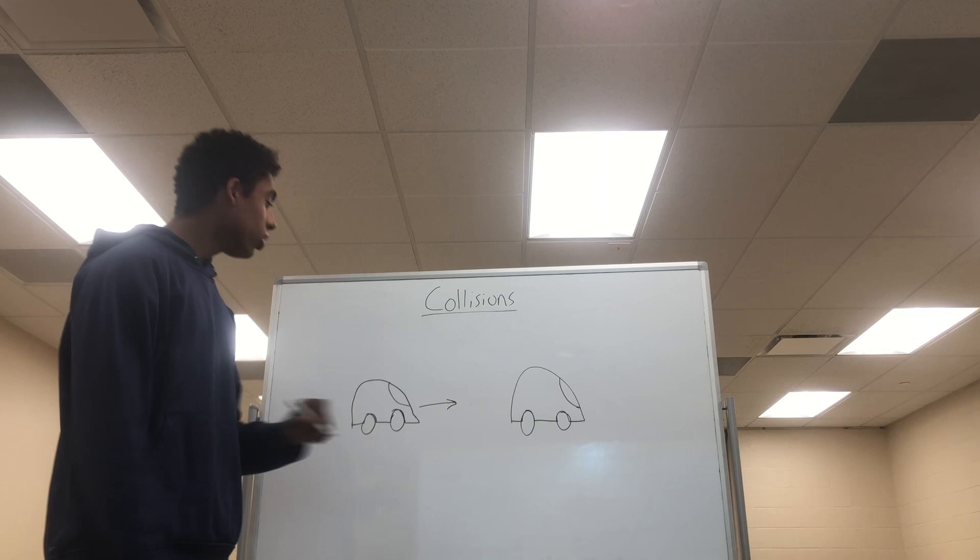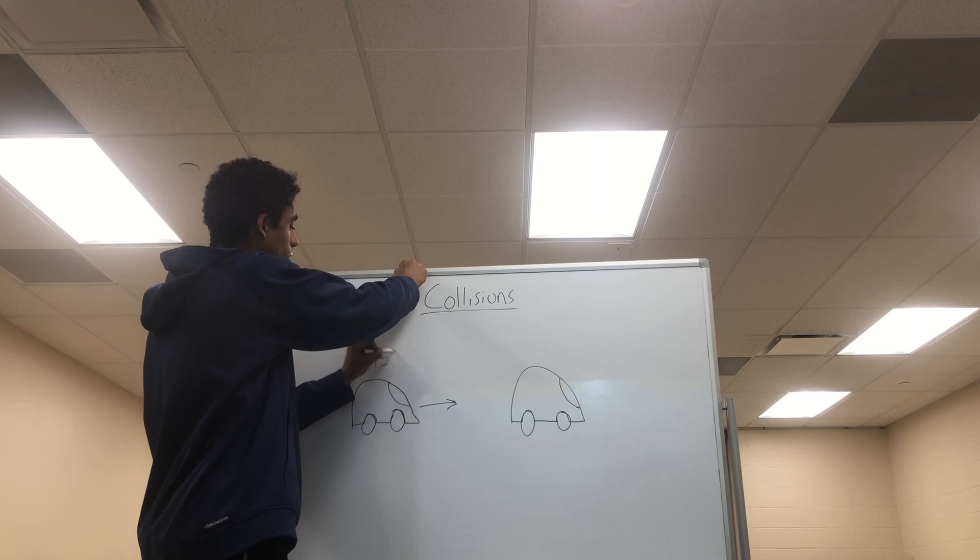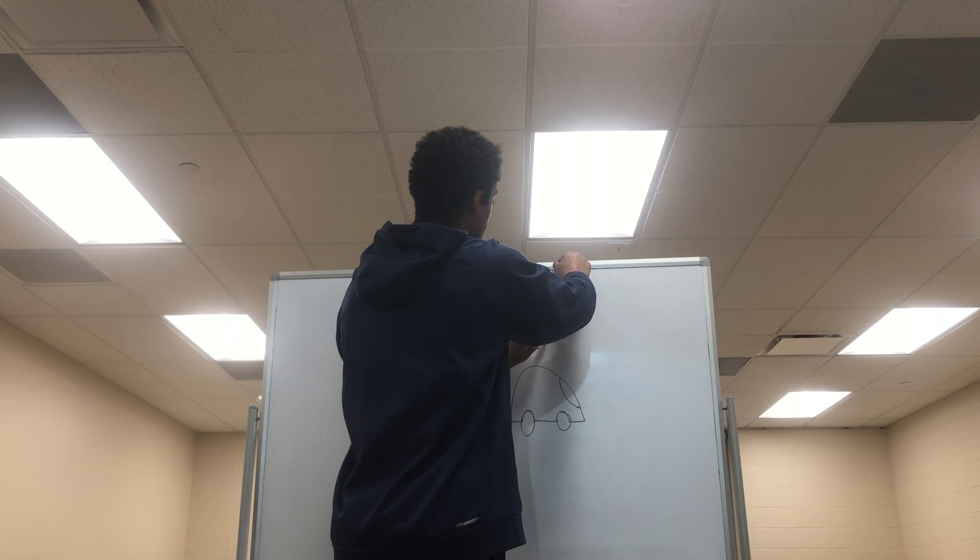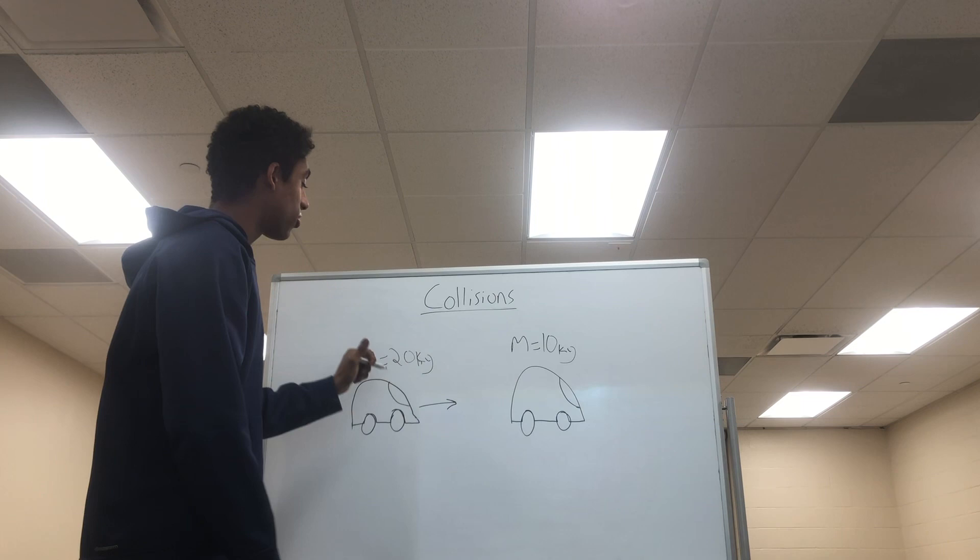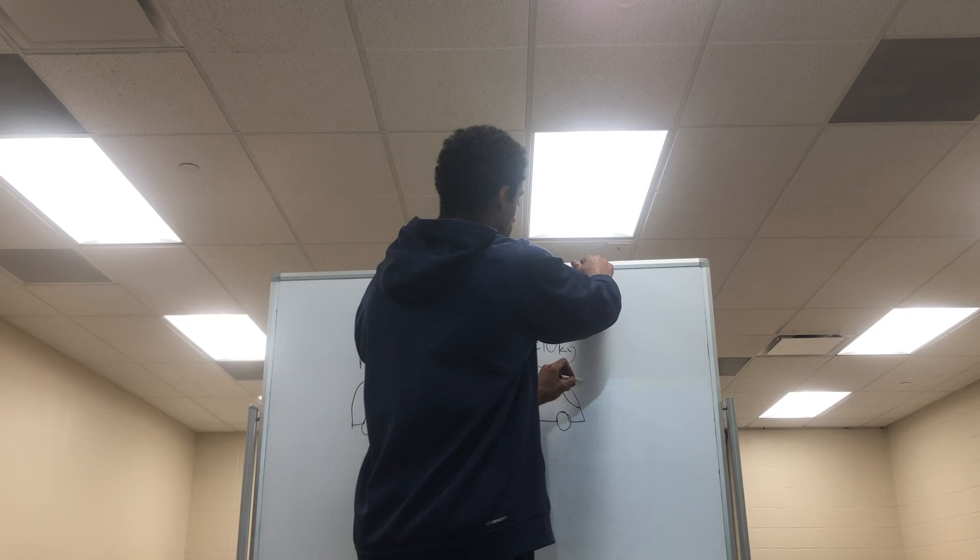We'll give car one a mass of 20 kilograms and car two a mass of 10 kilograms. Car one will be traveling at a speed of 5 meters per second, while car two will be stationary.